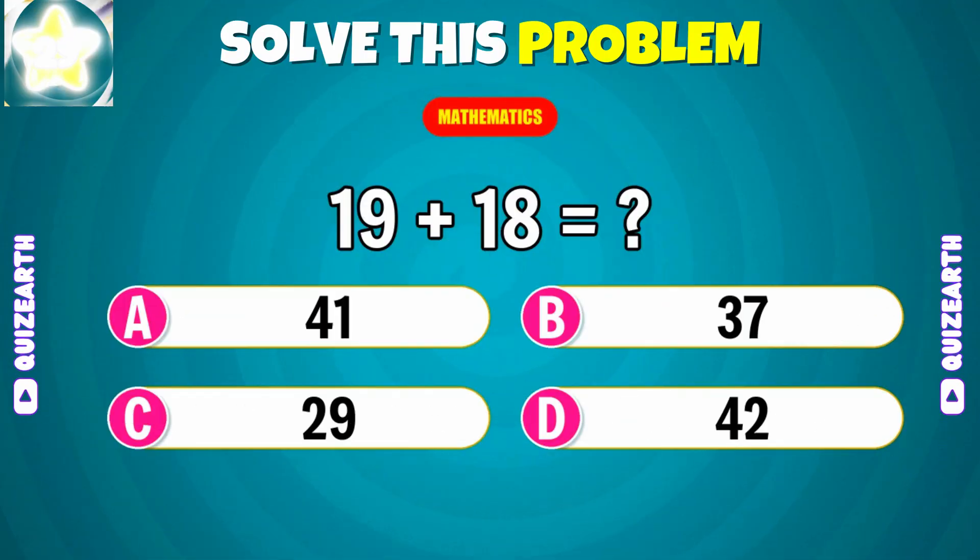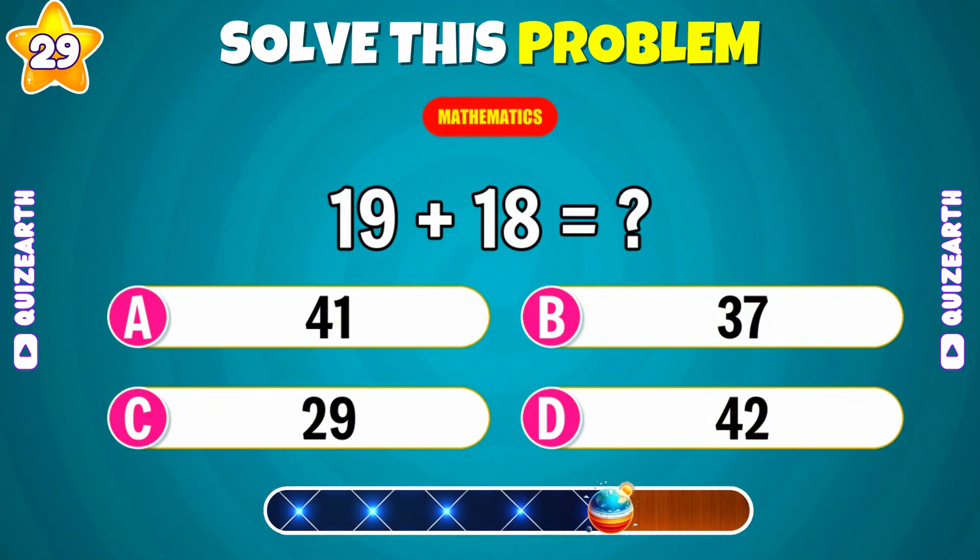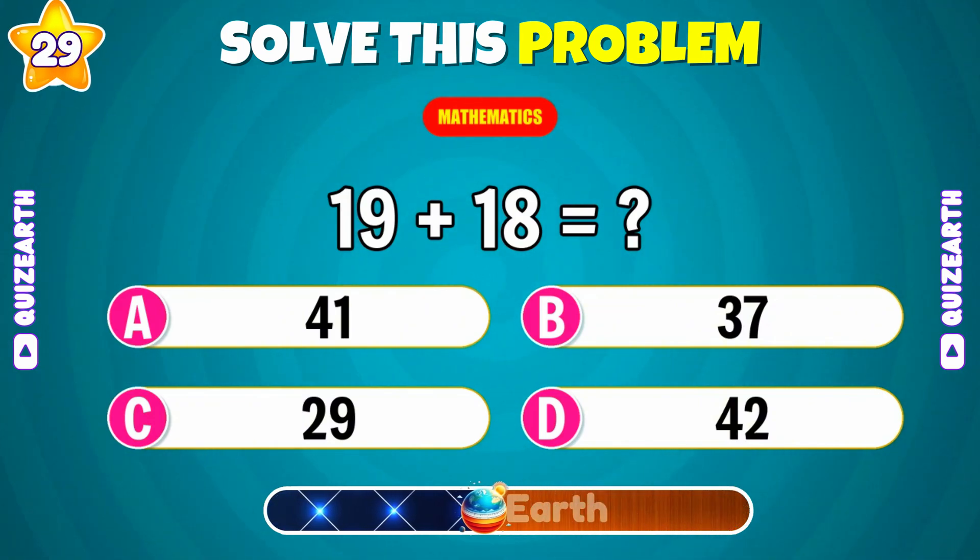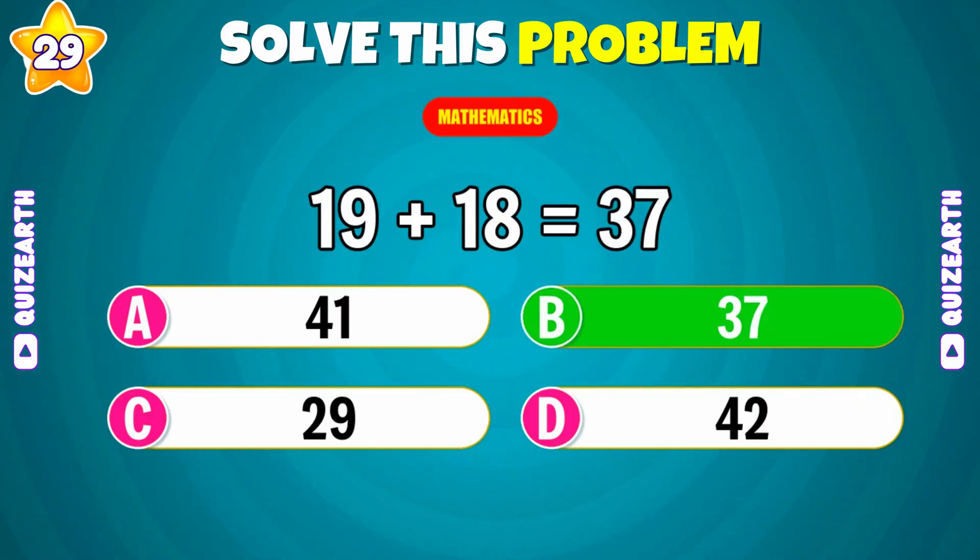This is getting interesting. 19 plus 18? Fantastic. The answer is 37.